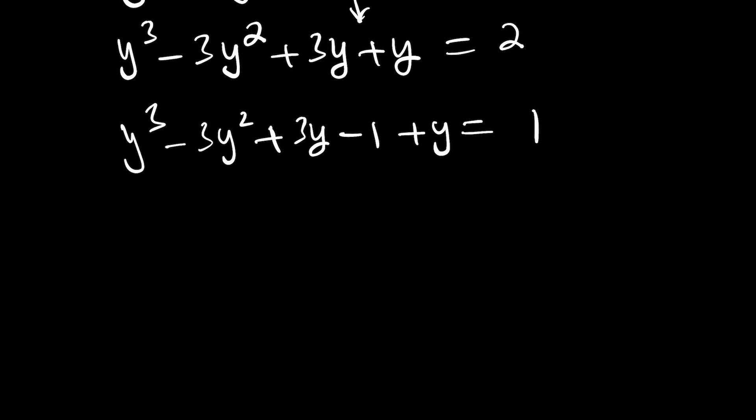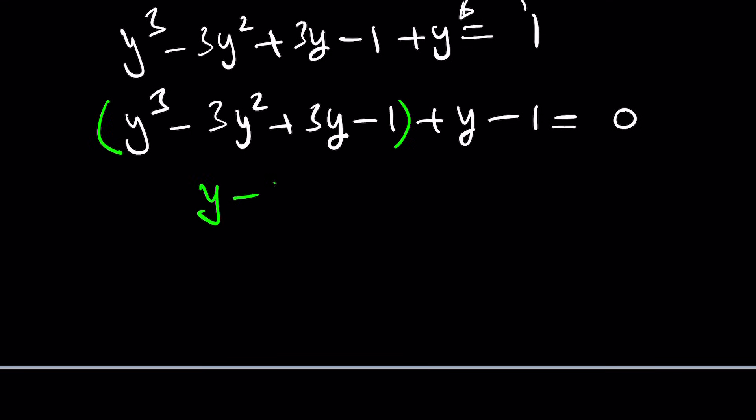Now, what happens is we can actually bring down the 1 over here. So this becomes y³ - 3y² + 3y. And then, you'll get -1 + y - 1. This 1, you're going to bring it, might equal 0. Now, why is that important? Now, take a look. This is a perfect cube. Hopefully, you recognize that. It's (y - 1)³.